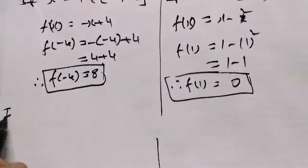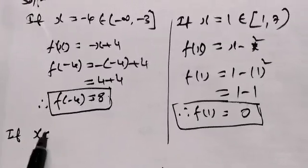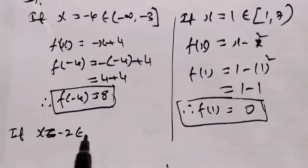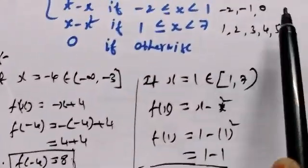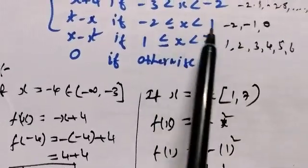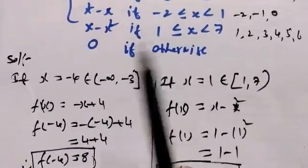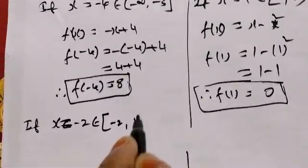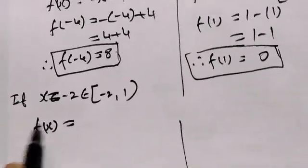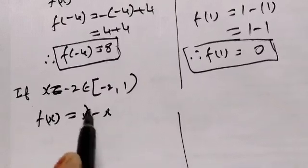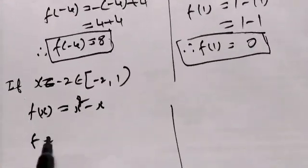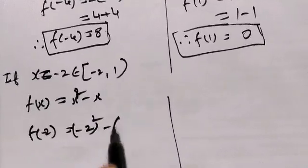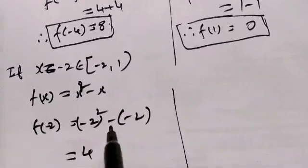So next, if x is equal to minus 2, where are we going to get minus 2? Here x equal to minus 2, minus 2 gives us 4, so minus minus plus 2, so 4 plus 2 is 6. Therefore f of minus 2 is equal to 6.